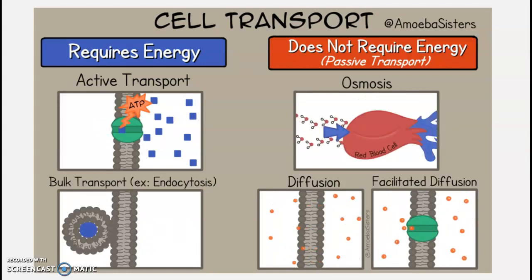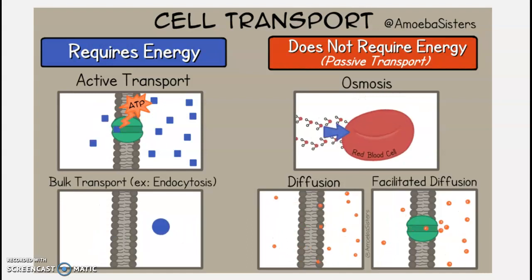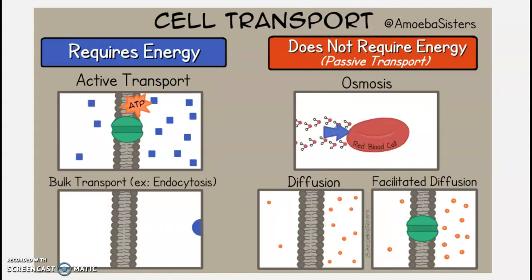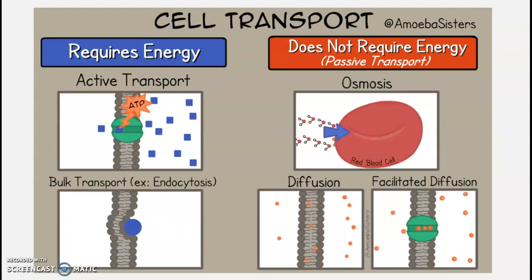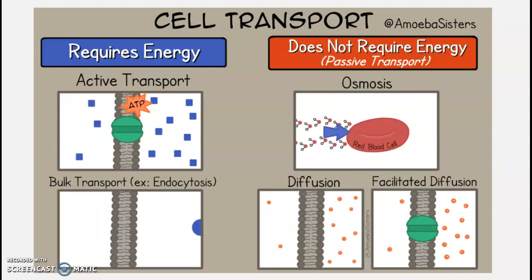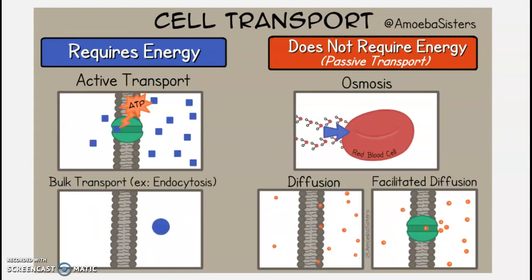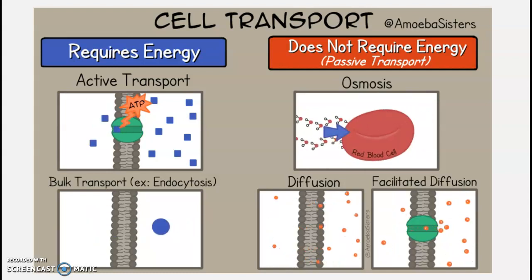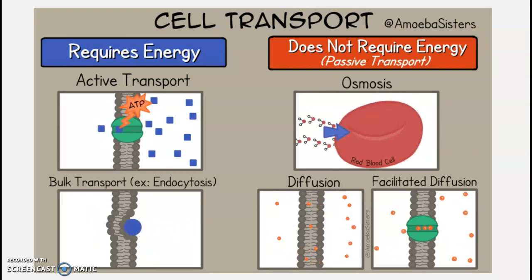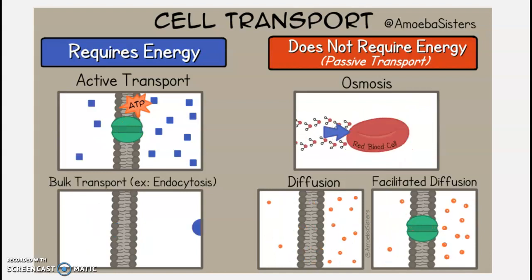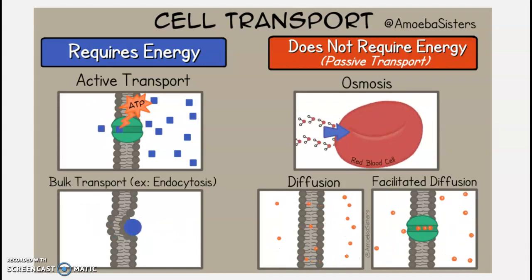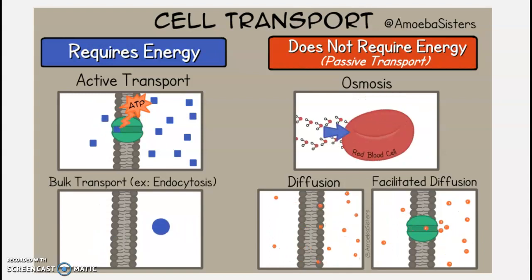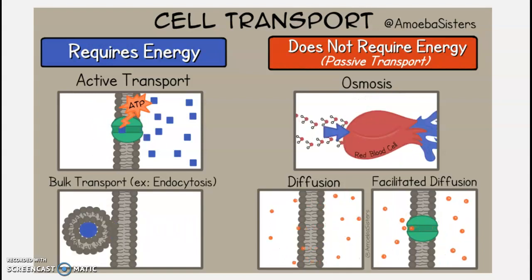Passive transport includes the process of osmosis, involving the movement of water into or out of cells, as well as the process of diffusion, referring to the movement of other types of molecules from a high concentration to a low concentration.